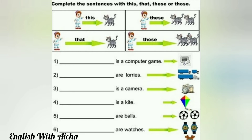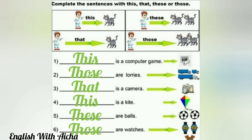Number one shows a small row — the answer is 'this': 'this is a computer game,' singular and near. Number two: 'those are lorries,' plural and far. Number three: 'that is a camera,' singular and far. And 'this is a kite,' singular and near. Take your time and we correct all together.